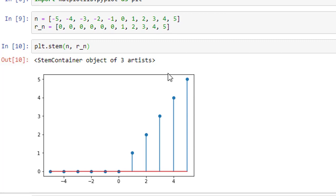So I get to see the unit ramp function for n varying from minus 5 to plus 5. At n equals 0, amplitude is 0. At n equals 1, amplitude is 1. At n equals 2, amplitude is 2, and so on.